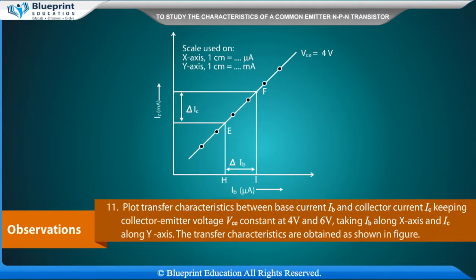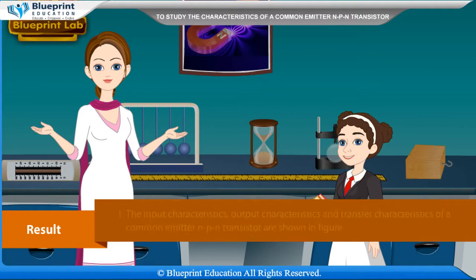Plot transfer characteristics between base current IB and collector current IC, keeping collector emitter voltage VCE constant at 4 volt and 6 volt, taking IB along X-axis and IC along Y-axis. The transfer characteristics are obtained as shown in figure 4. Result.